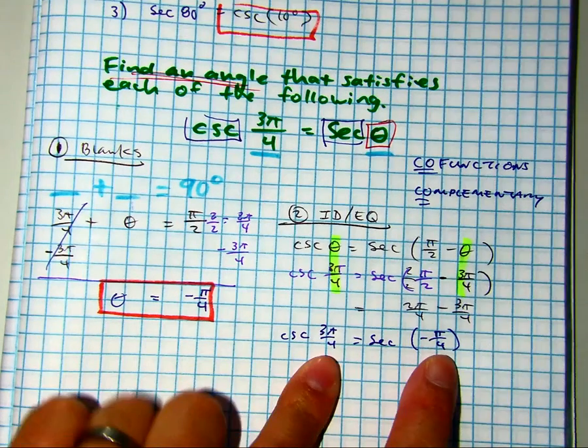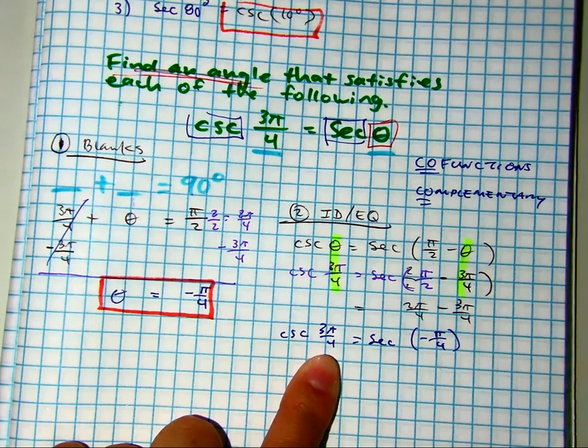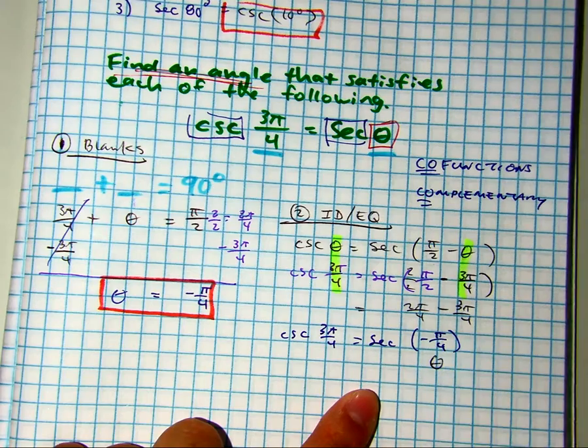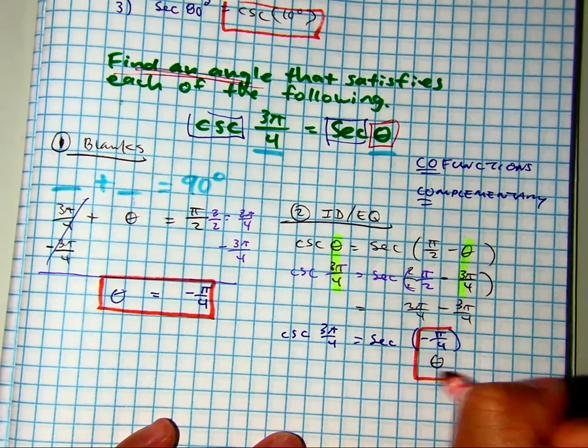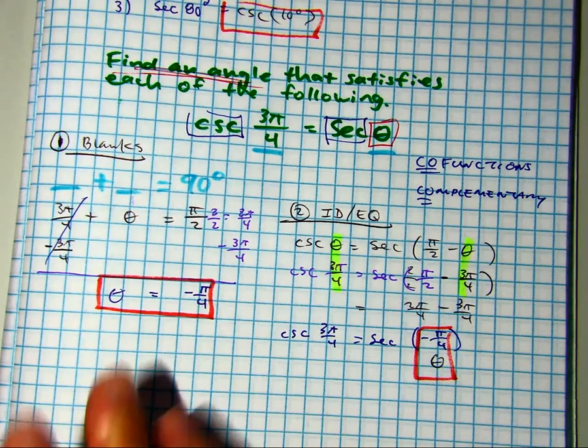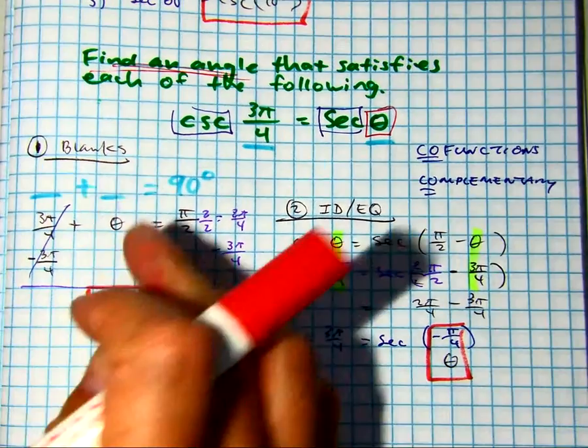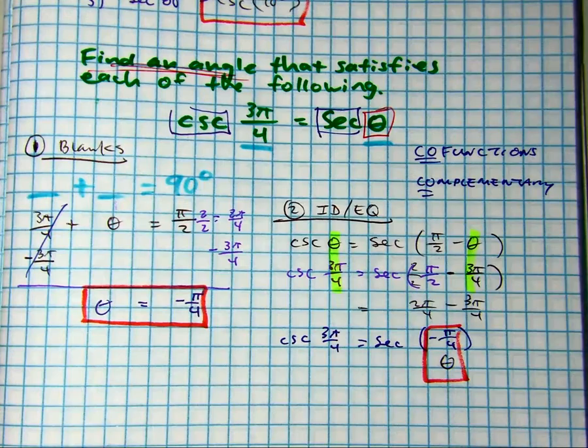And so theta is essentially your answer here. Theta is negative pi over 4. I wanted to present to you guys two ways of solving the problem, either using blanks or identity and equations.